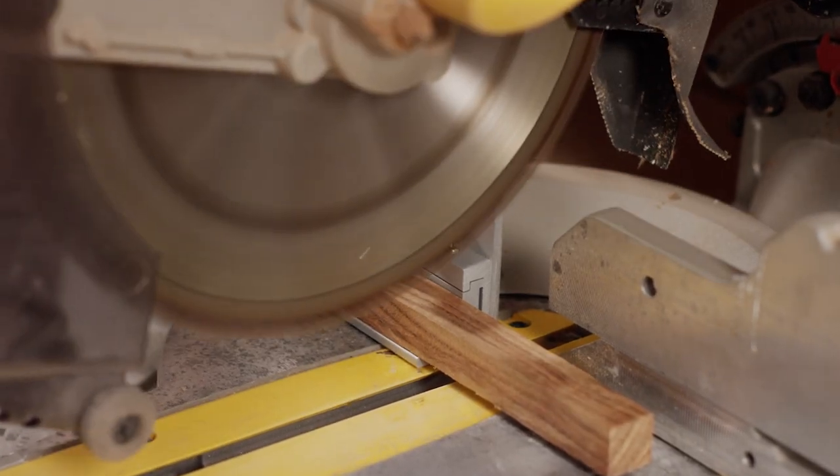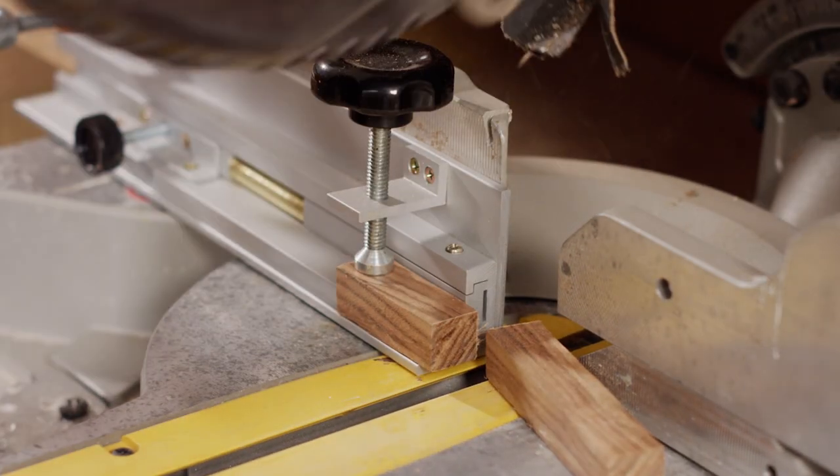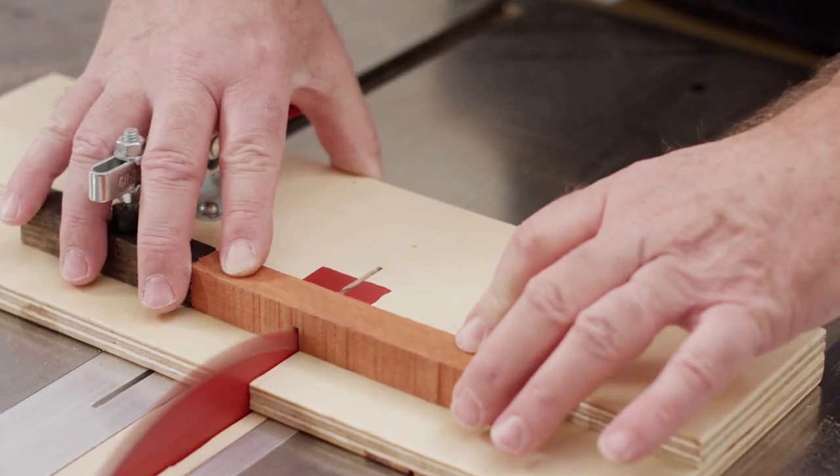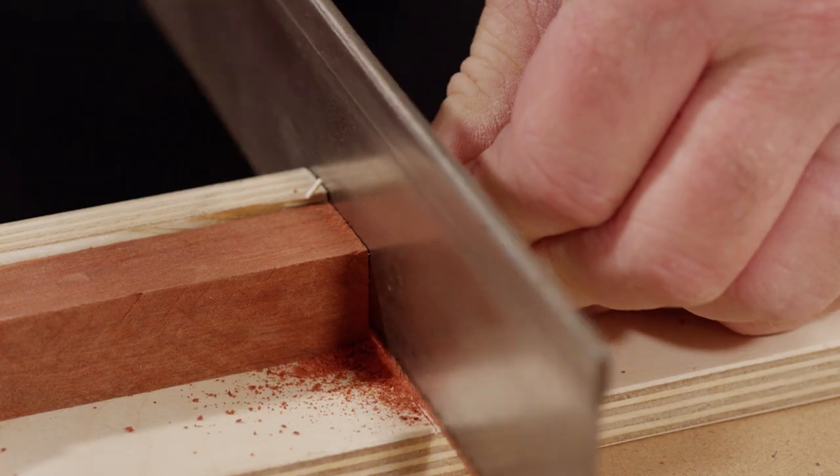There are several tools you can use to cross-cut your pen blanks to length: a miter saw, band saw, table saw, or even a hand saw will work.